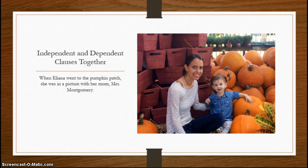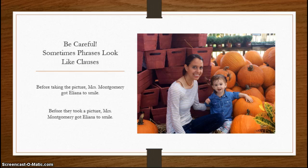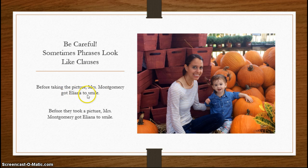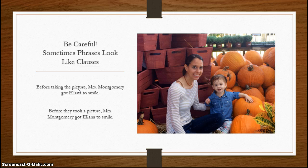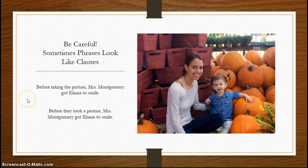Here's the hard part — you have to be careful. Sometimes phrases look like clauses, and Mrs. Rains is going to get into the nitty-gritty details of this in a little bit. But let's take a look. 'Before taking the picture, Mrs. Montgomery got Eliana to smile.' Here's my independent clause: 'Mrs. Montgomery got Eliana to smile' — subject, predicate. 'Before taking the picture' is a phrase — it starts with a preposition and doesn't have a noun and a verb. So we are starting our sentence with a prepositional phrase.